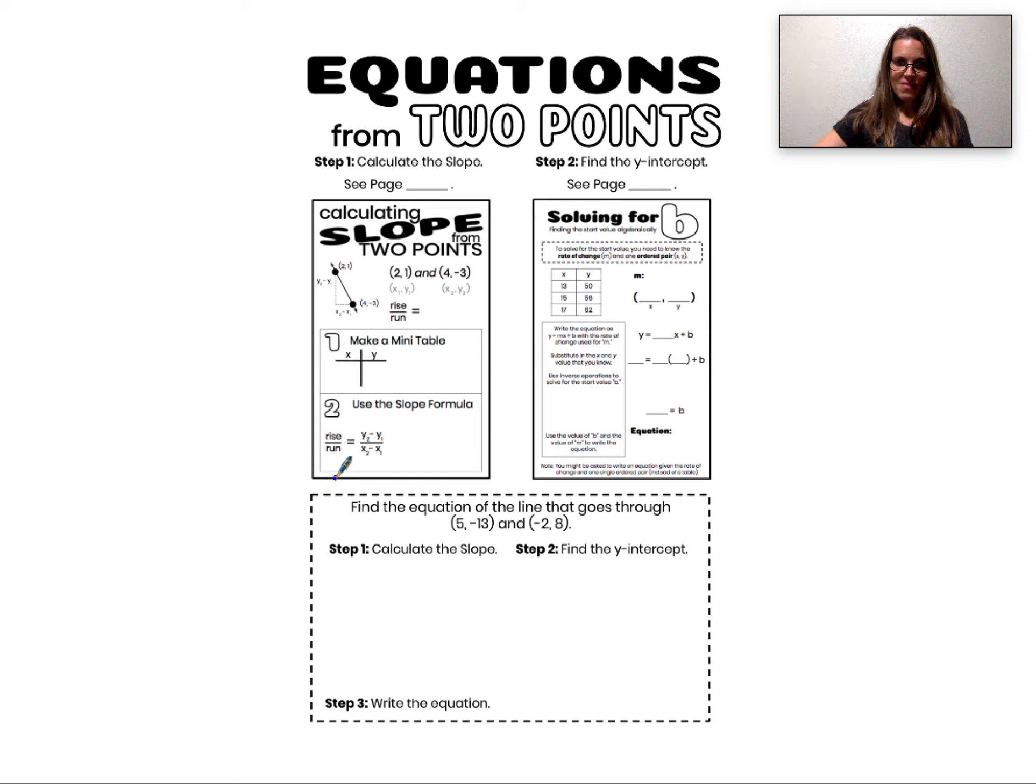Let's go ahead and do that by finding the equation of the line that goes through (5, -13) and (-2, 8). To calculate the slope, I can use the slope formula or I can use the mini table, which is my preferred strategy.